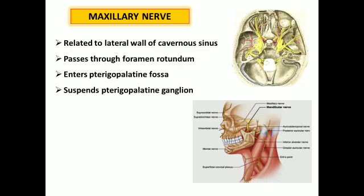The second division of the trigeminal nerve is the maxillary nerve. It is related to the lateral wall of the cavernous sinus in the cranial cavity, then passes through the foramen rotundum. After passing through the foramen rotundum, the maxillary nerve reaches the pterygopalatine fossa, where it suspends a peripheral parasympathetic ganglion called the pterygopalatine ganglion.